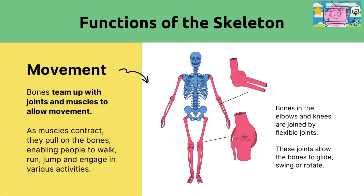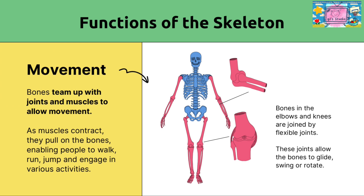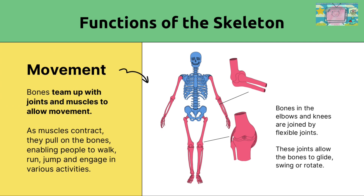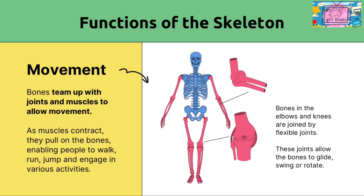Movement: bones team up with joints and muscles to allow movement. As muscles contract, they pull on the bones, enabling people to walk, run, jump, and engage in various actions. Bones at the elbows and knees are joined with flexible joints. These joints allow the bones to glide, sink, or rotate.